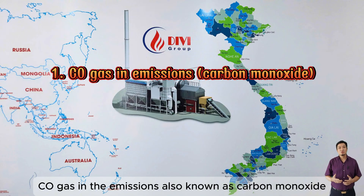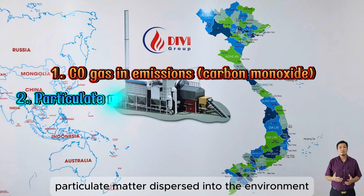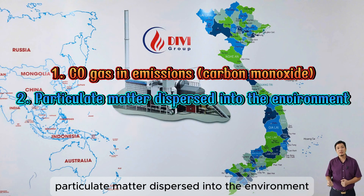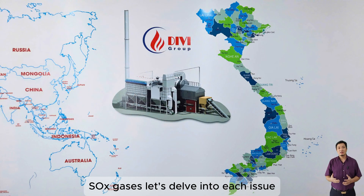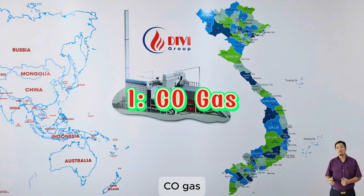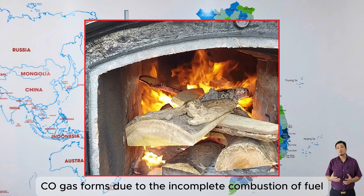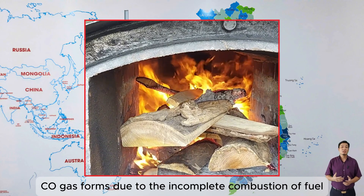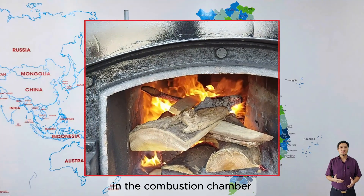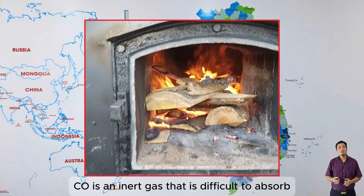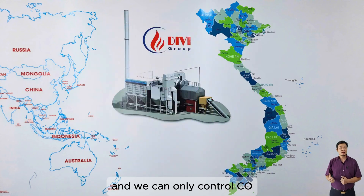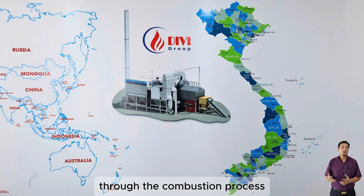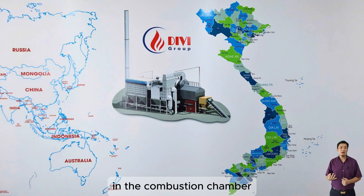The three issues are: CO gas emissions, also known as carbon monoxide; particulate matter dispersed into the environment; and SOx gases. Let's delve into each issue. CO gas forms due to the incomplete combustion of fuel in the combustion chamber.